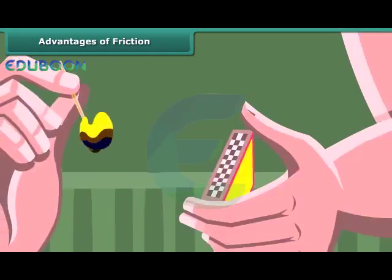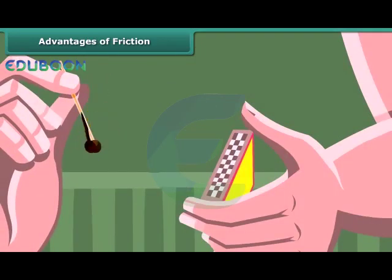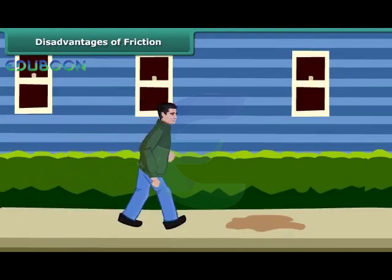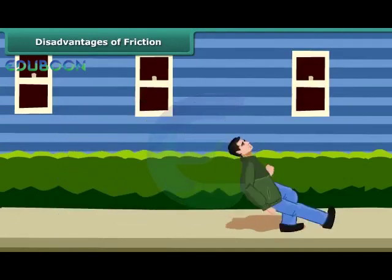When we rub a matchstick against the rough side of the matchbox, the friction between the head of the matchstick and the side of the matchbox produces heat and ignites the match. When we step on a greasy or oily surface, the foot slips because friction gets reduced due to the smoothness of the grease or oil.